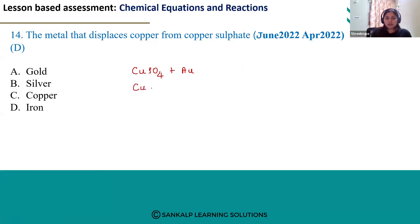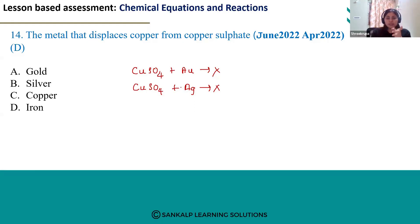Similarly, silver can also not displace copper from its copper sulphate solution because the reactivity of silver is less than copper. We have to consider the reactivity series or reactivity of the metals. On the basis of that, we can decide whether the given metal can displace copper or not. And copper reactivity will be the same — no change.